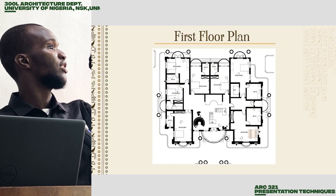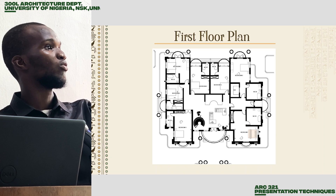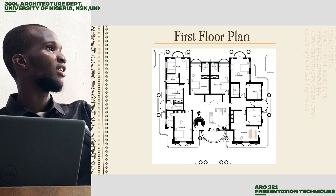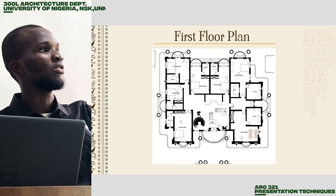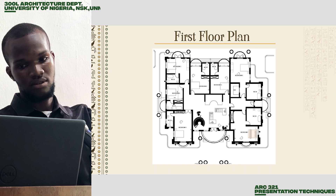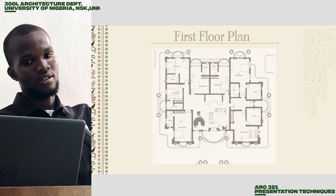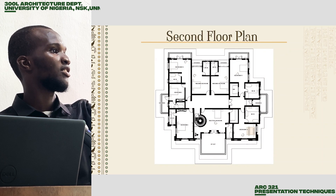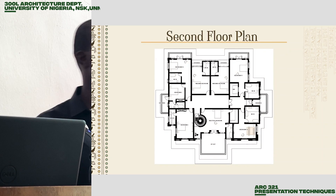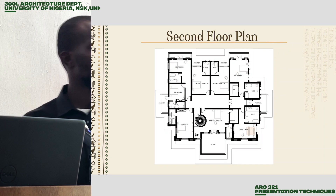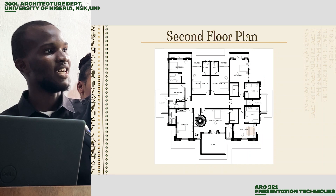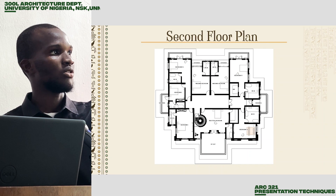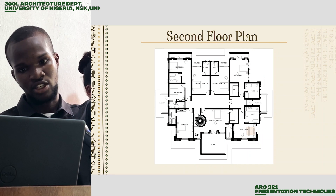Moving on to the first floor plan, which has the sitting area — a family lounge — with seven bedrooms in total. The final floor has the remaining rooms, including the master bedroom, which has exclusive access to the topmost layer of the sit-out.